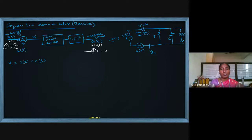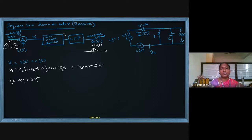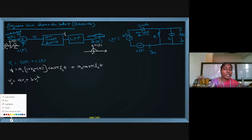A single triangle will come out — this is the operation of the square law demodulator. We know the equation for s(t): it is A_c[1 + k_a·m(t)]·cos(2πf_c·t), and c(t) means A_c·cos(2πf_c·t). This is v1. At the nonlinear device, the output v0 will be: v0 = a·v1 + b·v1². We substitute, simplify, and higher order terms are handled by the low pass filter.